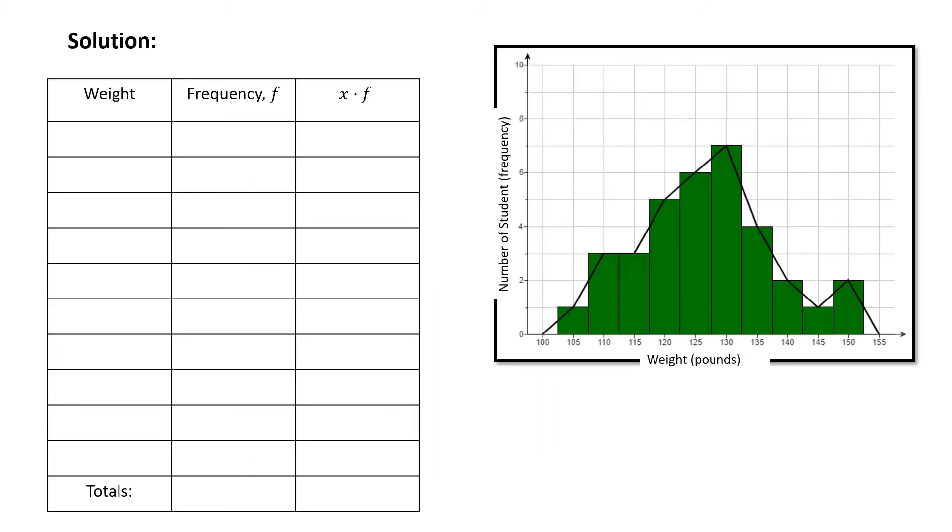We'll begin this problem by recording the weights that are indicated along the horizontal axis of the histogram. We'll begin with 105, then 110, 115, 120, 125, 130, 135, 140, 145, and 150.